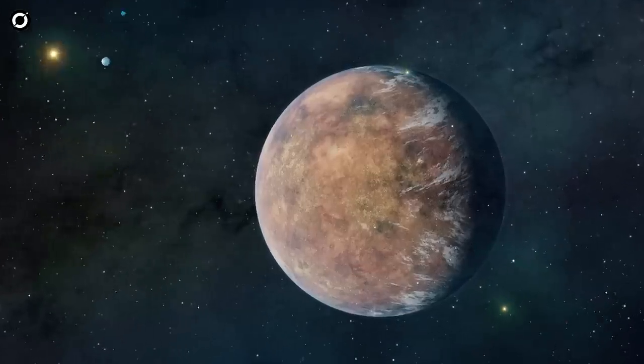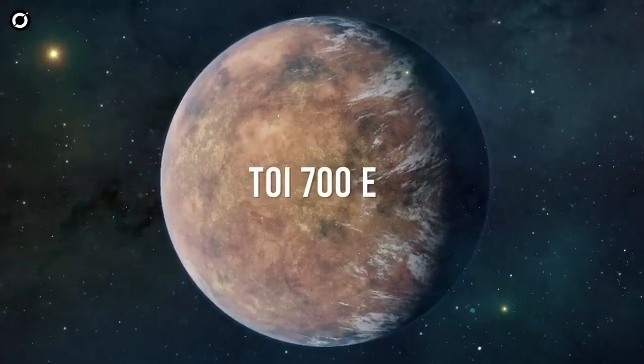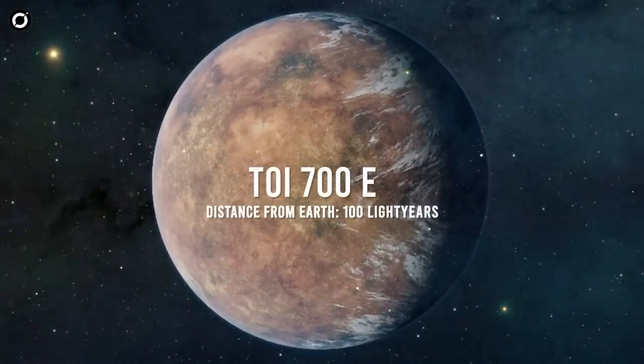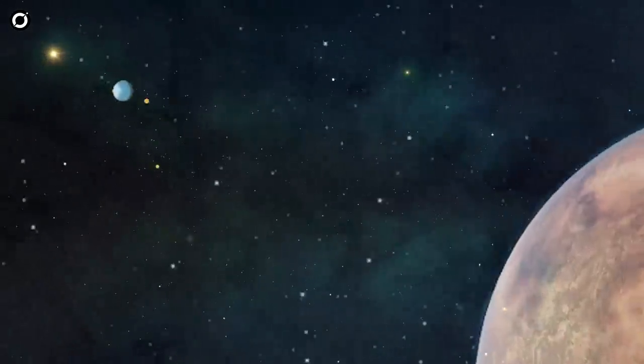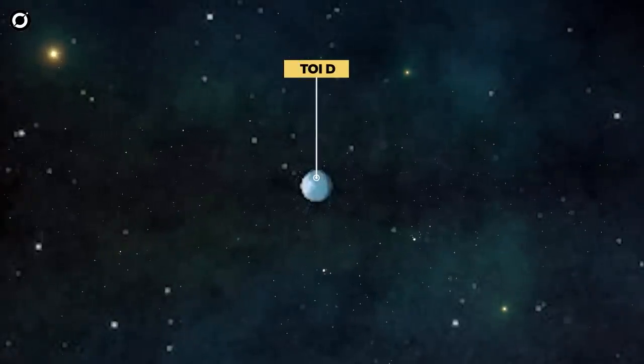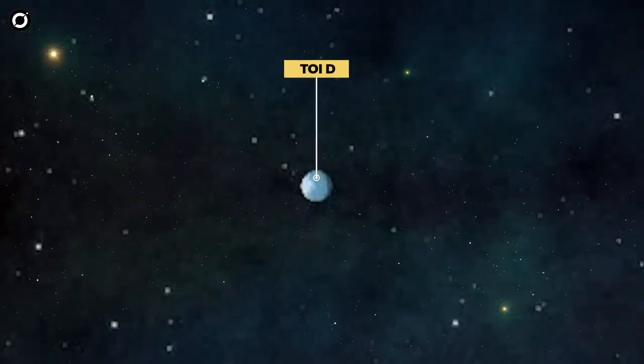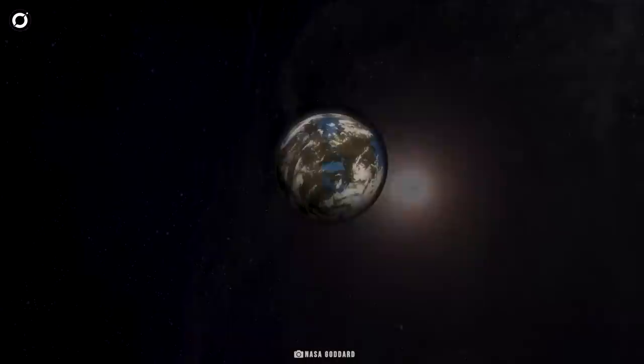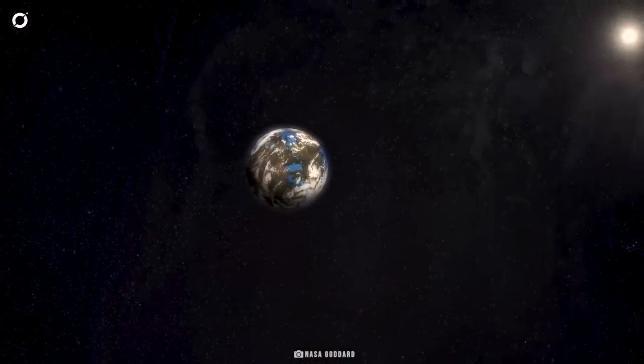The planet called TOI 700e is the fourth planet discovered in the TOI system, which is only 100 light years away. The other planets in this system have been named TOI b, c, and d, which were found in the first year of TESS's observation. The composition of planets b and d is more likely rocky, and the composition of planet c is more likely similar to that of Neptune.